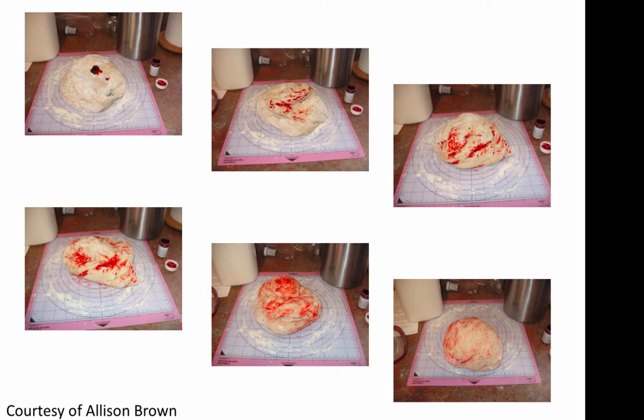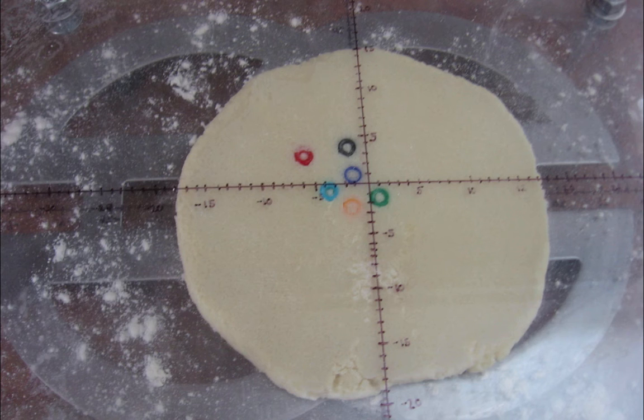But Dr. Brown did do a bit of tracking here. What she did was put colored beads in the dough and then track where they went at each iterate of the map. The plexiglass that you're seeing here is part of the apparatus that Dr. Brown built to make the kneading operation as repeatable as possible.